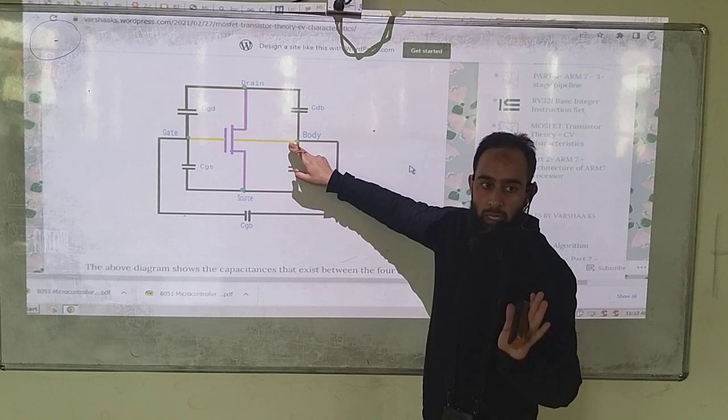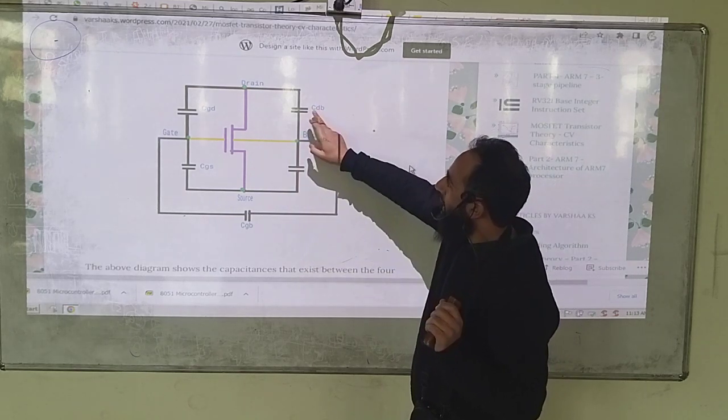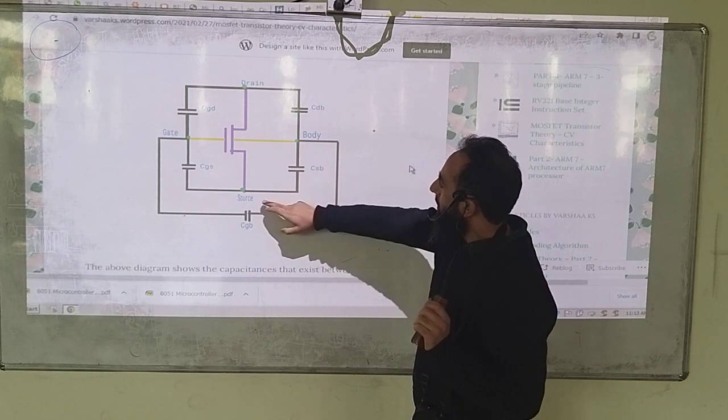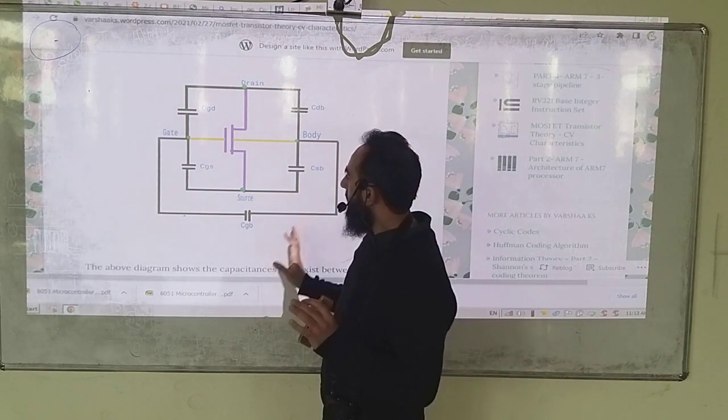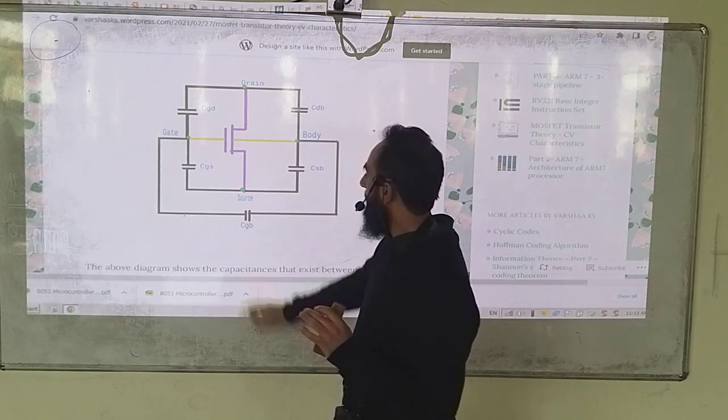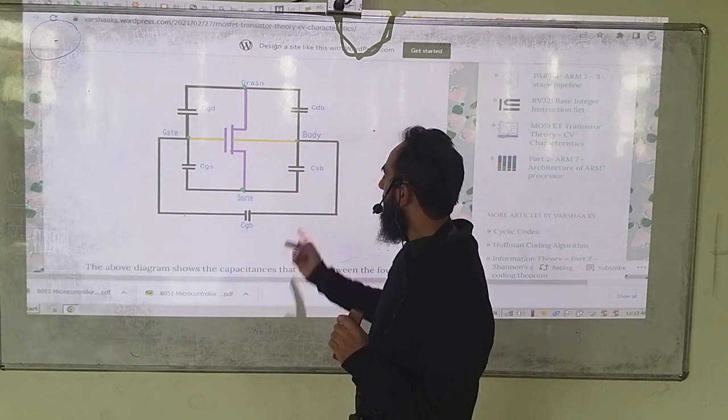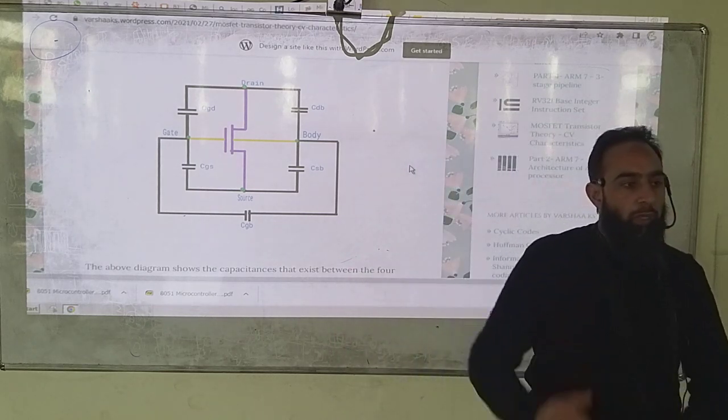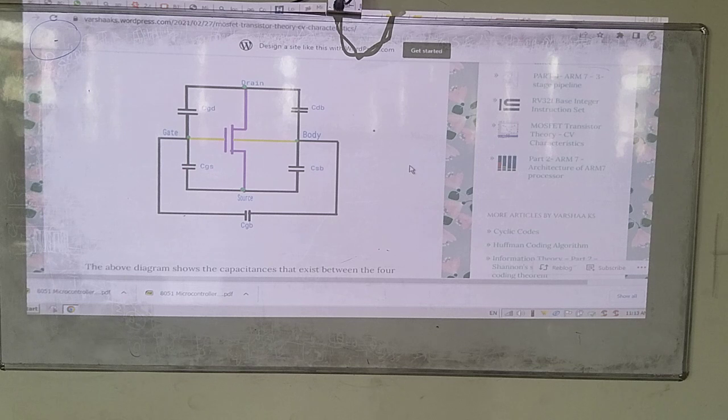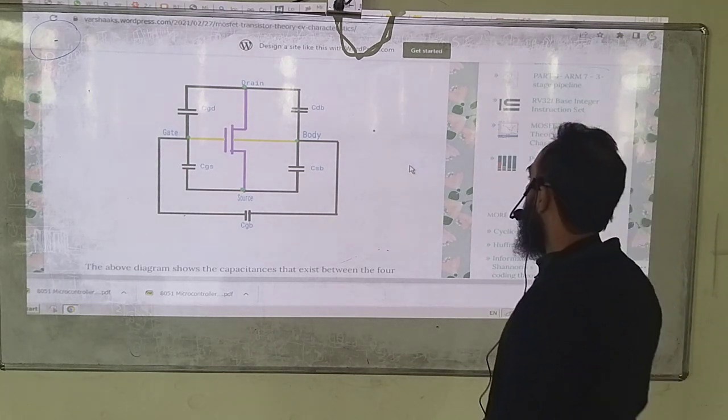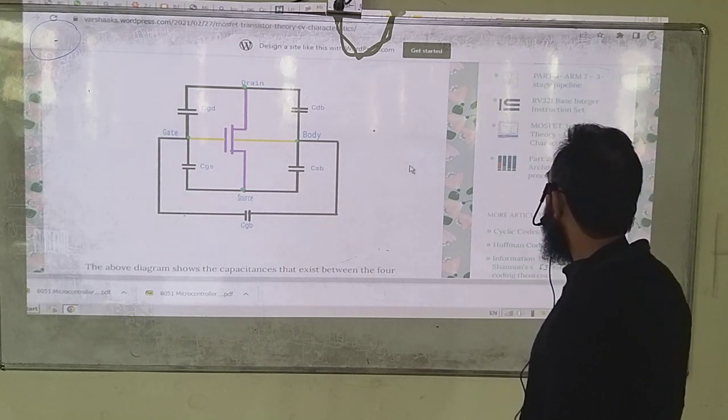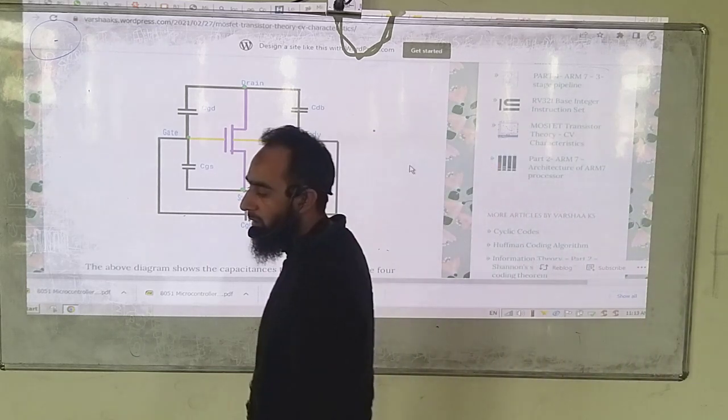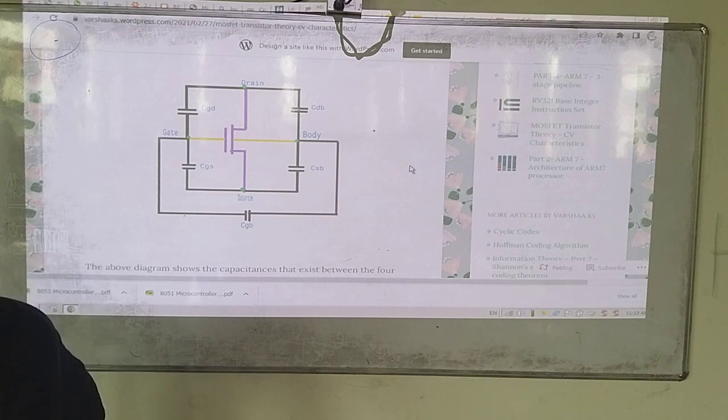The fourth one is the body terminal, so this capacitor is between drain to body, this one between source to body and then the overall. So these are the different capacitors that you may encounter while you are talking about a MOSFET.